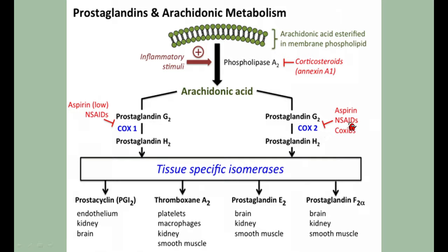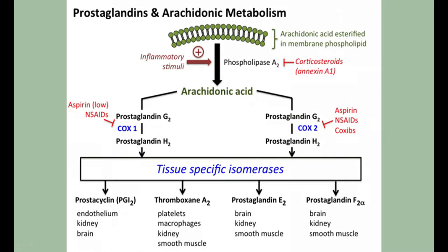Aspirin and NSAIDs stop the COX enzyme and hence stop prostaglandin synthesis. Celecoxib and other coxibs selectively inhibit COX-2 only. This is important because COX-1 is also present in the stomach lining, where it maintains prostaglandin E2 formation responsible for maintaining the gastric mucosa. Inhibiting COX-1 leads to gastric irritation — a side effect of aspirin. Since COX-2 is present only at the site of inflammation, coxibs inhibit COX-2 selectively without gastric symptoms. The answer is that prostaglandins are inhibited.